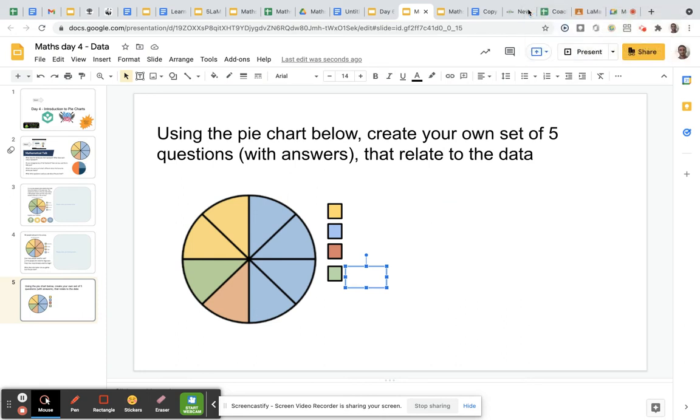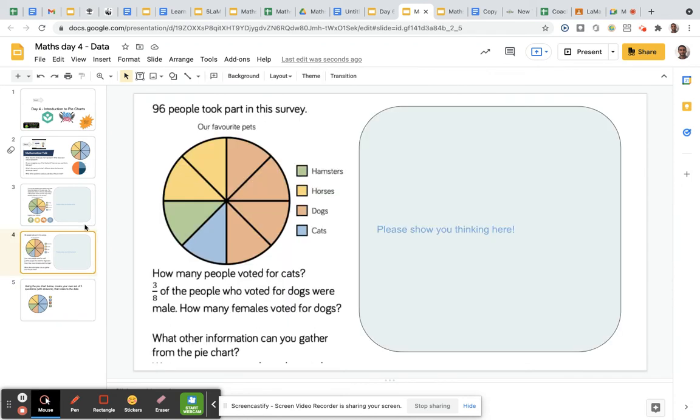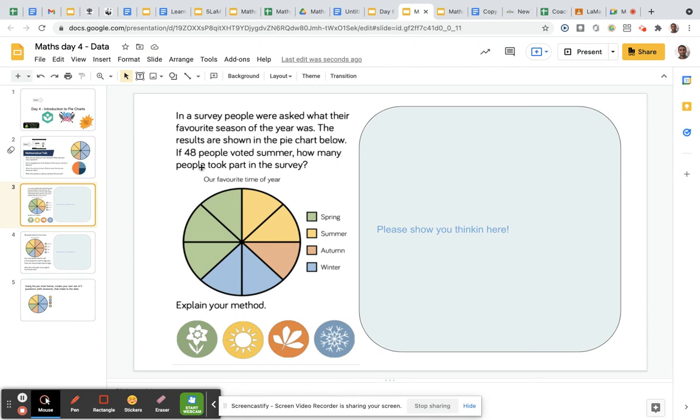Okay so here they've said 96 people that is our whole. 48 people so it's giving you the fraction but then you can work out the whole.